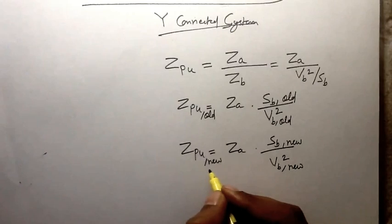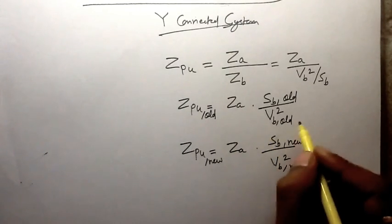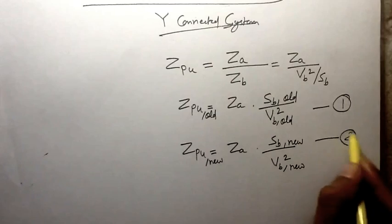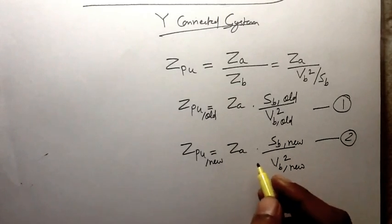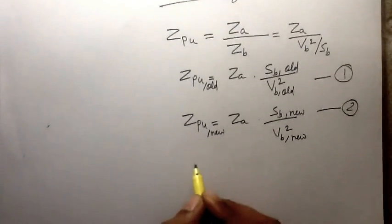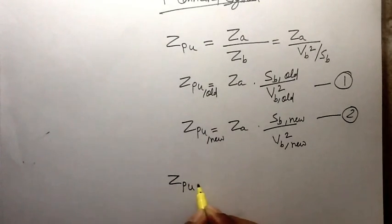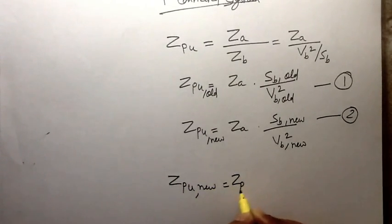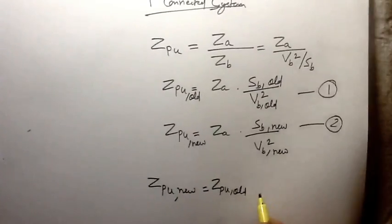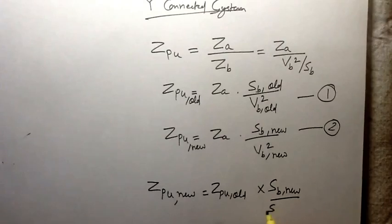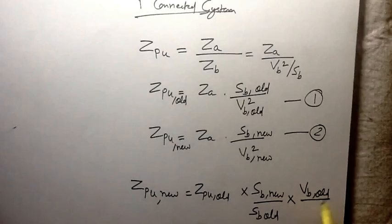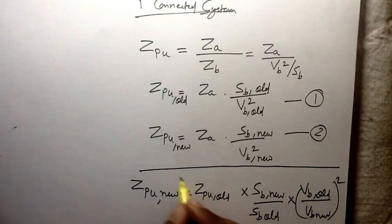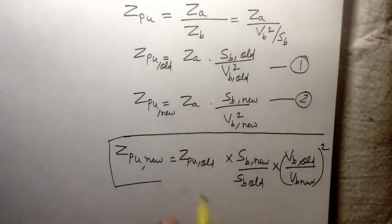Dividing these two equations — equation one and equation two — we arrive at the very important formula: Z_per-unit_new equals Z_per-unit_old times (S_base_new / S_base_old) times (V_base_old / V_base_new) squared. This formula is very important in power system analysis.